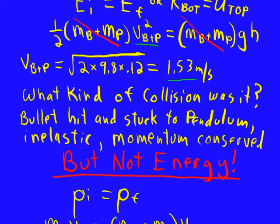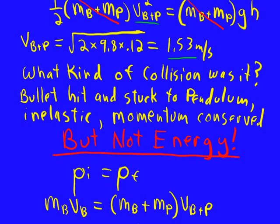The initial momentum equals the final. We want to be careful here now. Initial means the bullet before it collides, and final now is just after the collision. That's what we used in the energy conservation step as our initial energy. It is now the final momentum. The momentum of the bullet before the collision is the momentum of the bullet and the pendulum just after the collision.